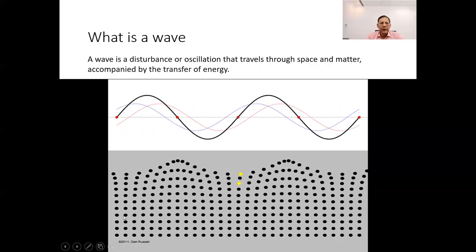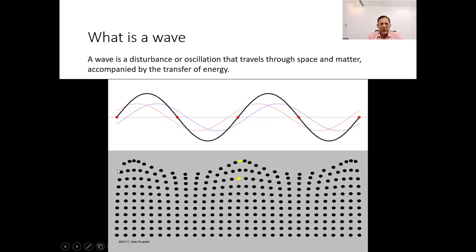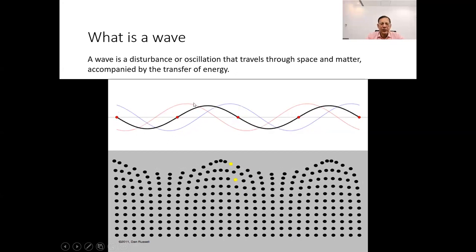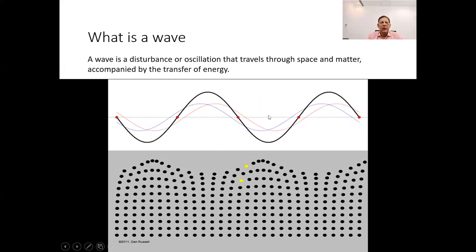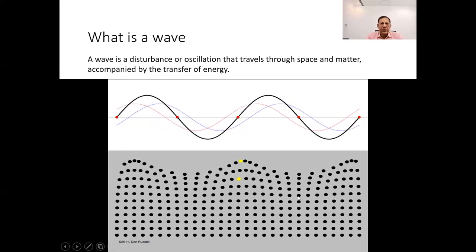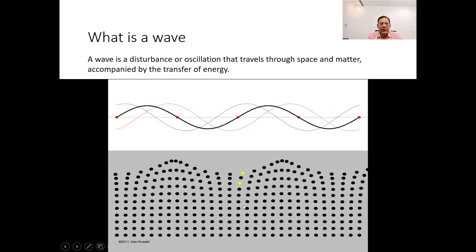Before going into details of a sound wave, we should understand what is a wave. Waves are disturbances or oscillations that travel through a medium, such as air and water. There are other types of waves that can travel even through an empty space.